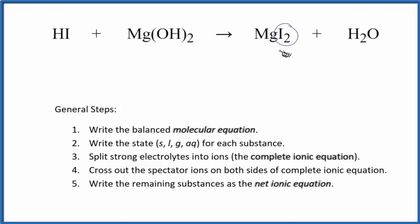I can see I have two iodine atoms here and just one here. I'll put a two in front of the HI. Now I have four hydrogens and two oxygens, and only two hydrogens and one oxygen. I'll just put a two here, and this equation is balanced.